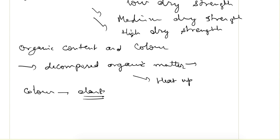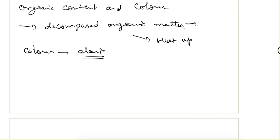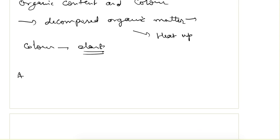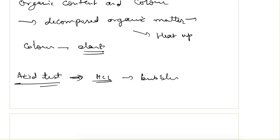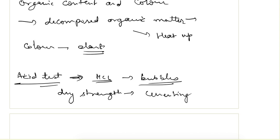These are various tests applicable in the field. One more test is the acid test, which is used to check if the soil contains calcium. The soil is tested with hydrochloric acid, and if it starts to form bubbles, it means calcium is present. This soil may then show some extra dry strength, which is due to the cementing capacity of calcium rather than the soil itself.